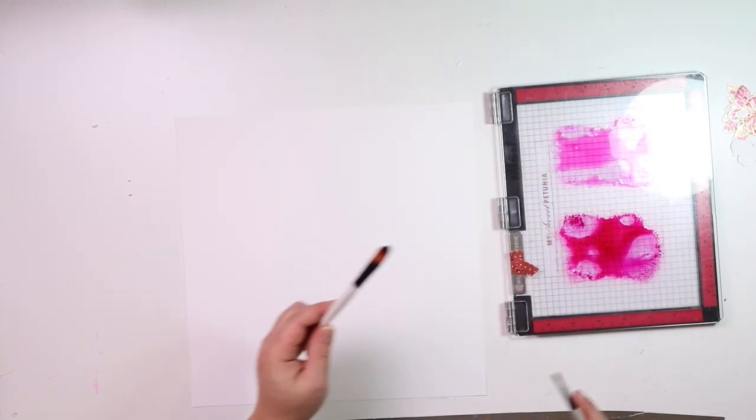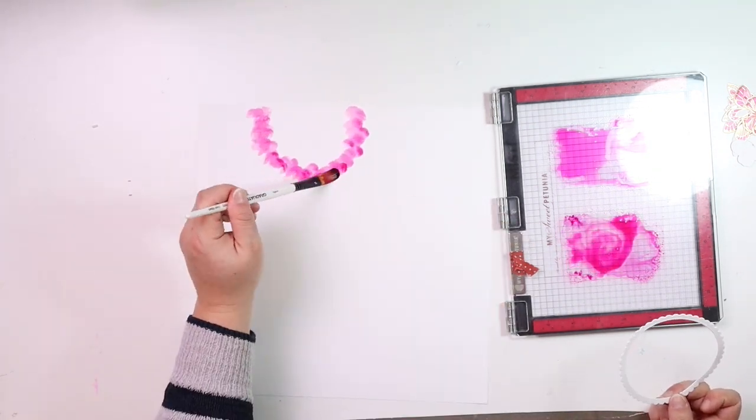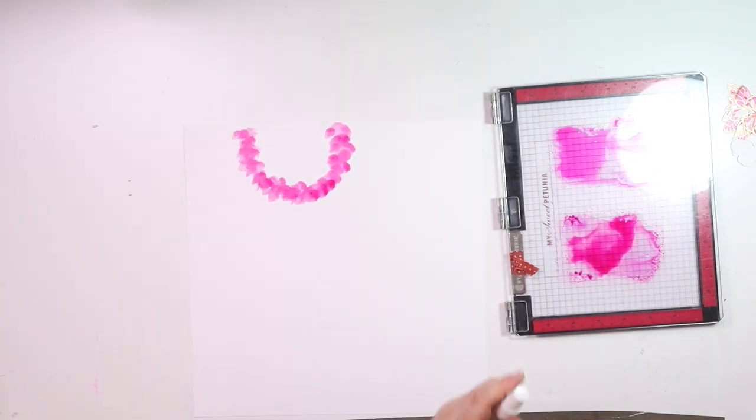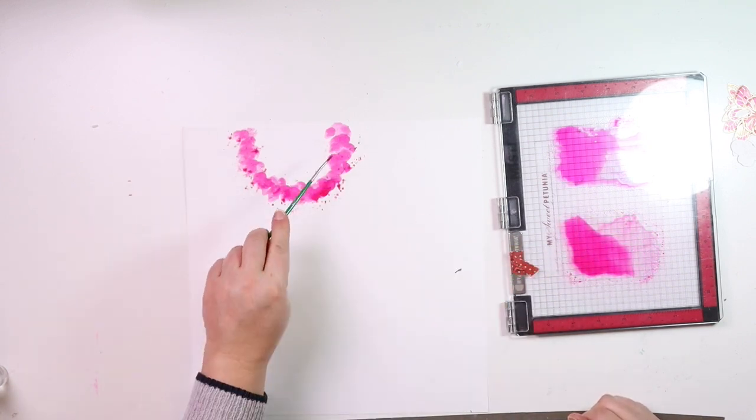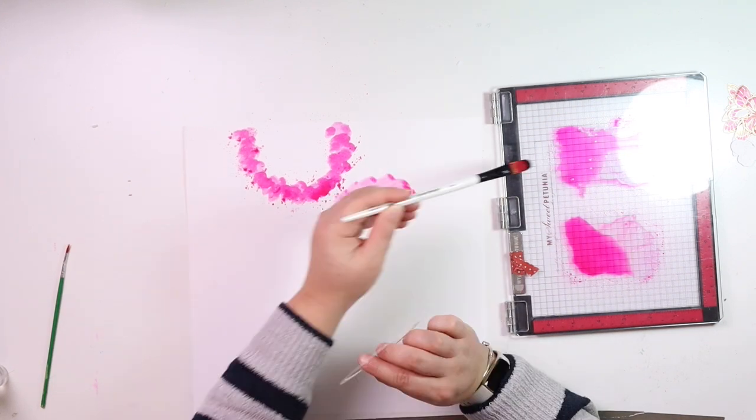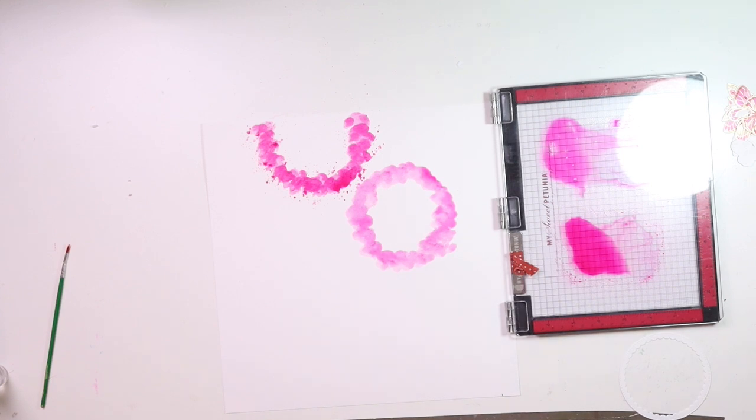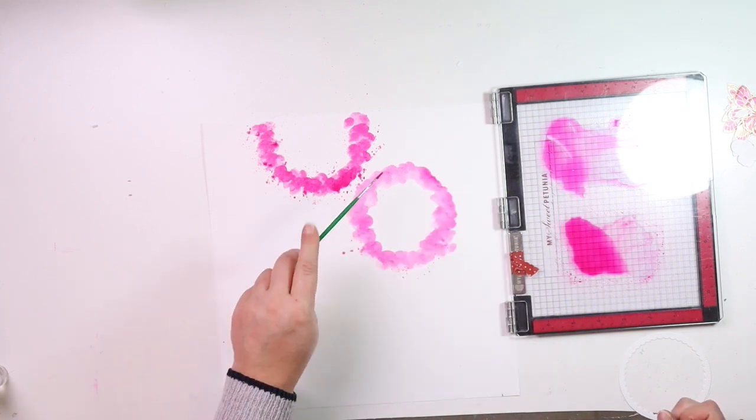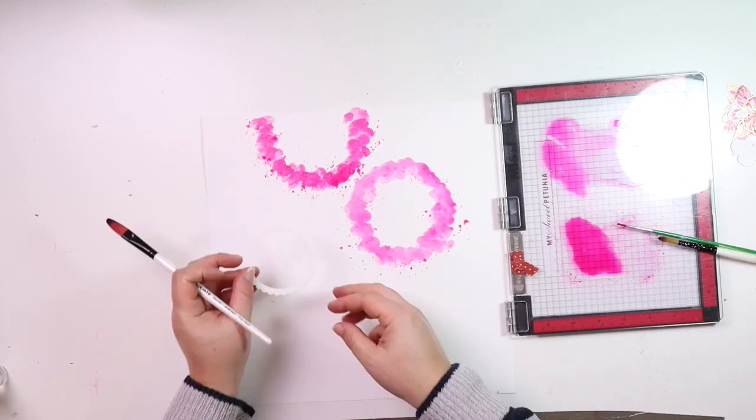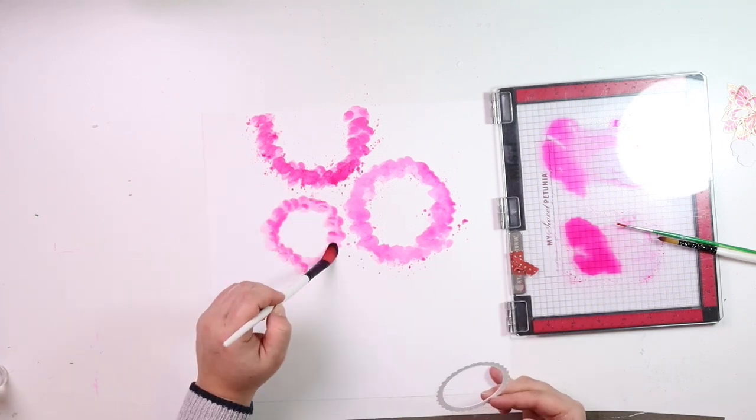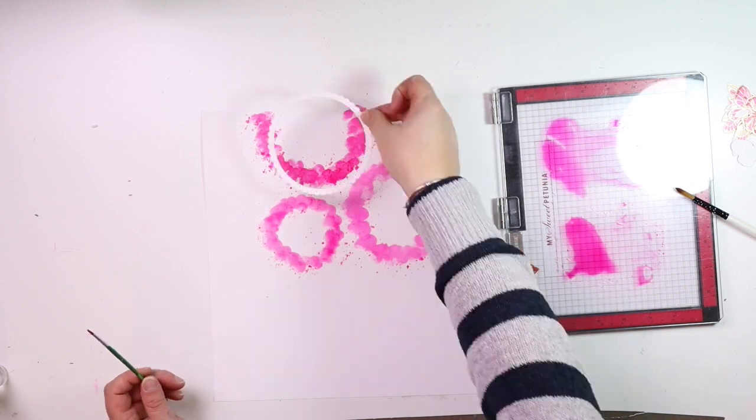I then went on to water down some of the pink ink, the same pink that I used for my butterflies. I go ahead and paint some circles on my white cardstock. I'm just looking at the size by taking one of the little circles, and I just then randomly free-handed a few circles.